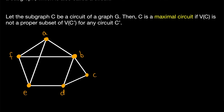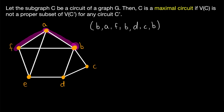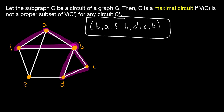Before we read the definition of a maximal circuit, let's see a quick example. In this graph, if we go from B to A to F, then back to B, then to D, then to C, and then back to B, that is an example of a circuit, which we could represent as this sequence of vertices.